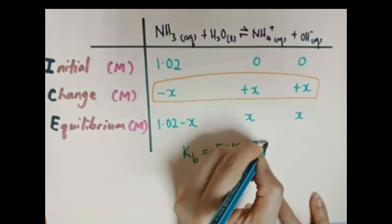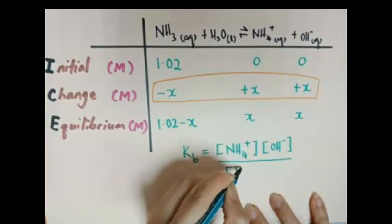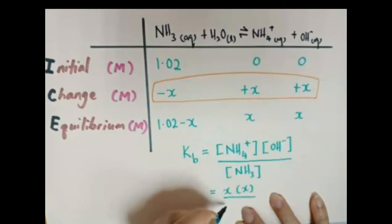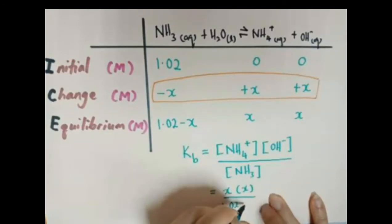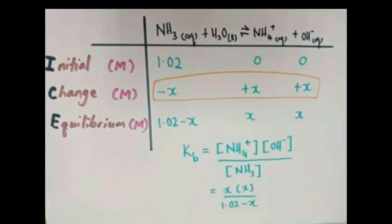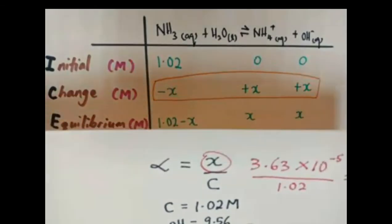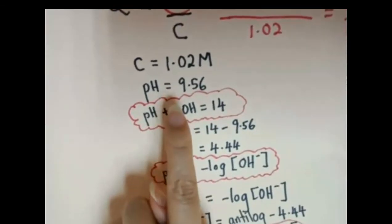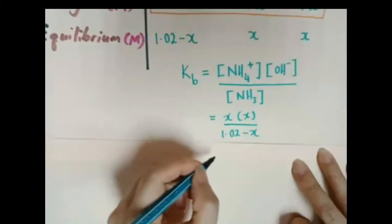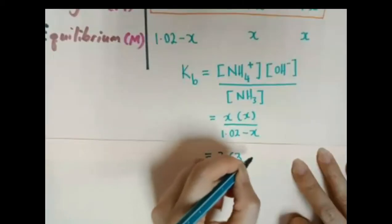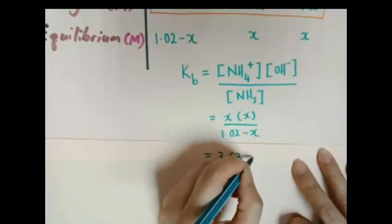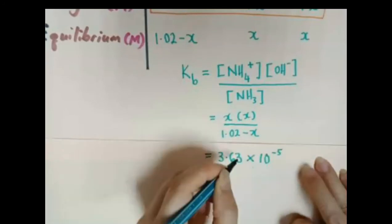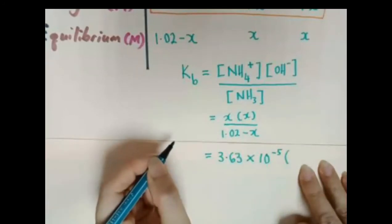Next, write the Kb expression. Kb is equal to x squared over (1.02 minus x). From part A, we already obtained the value of x, so we substitute it into the formula for Kb.